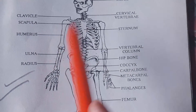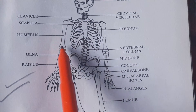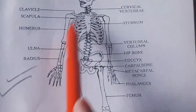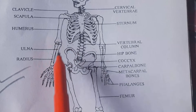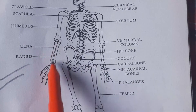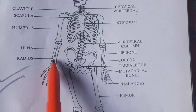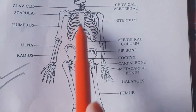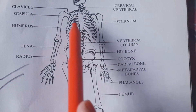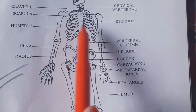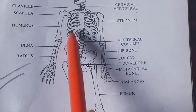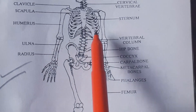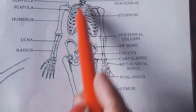The shoulder blade is called the scapula, and the upper arm bone is called the humerus. Below the humerus there are two bones: one is called the ulna and the other is the radius — these form the skeleton of the forearm. The sternum has 12 ribs on each side, making a total of 24 ribs attached to the sternum.